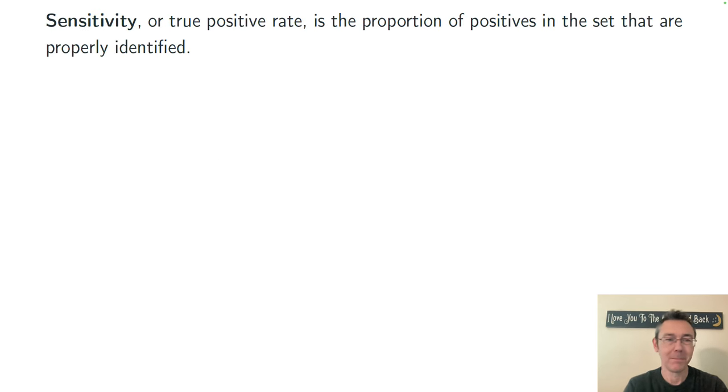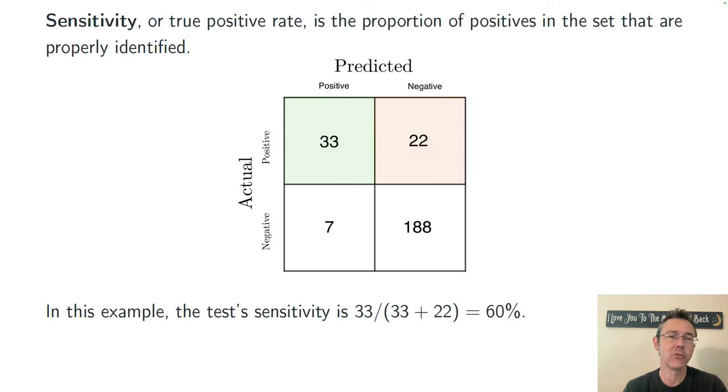Just in the context of what questions they actually address. First of all, sensitivity. This is the proportion of positives in the set that are properly identified. The true positive rate.